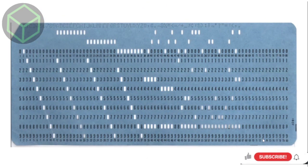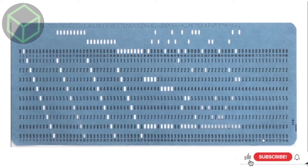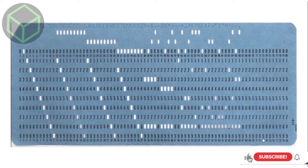The next portable storage device is the punch card, also known as a Hollerith card or IBM card. Punch cards are paper cards where holes may be punched by hand or machine to represent computer data and instructions. They were a widely used means of inputting data into early computers. The cards were fed into a card reader connected to a computer, which converts the sequence of holes into digital information.